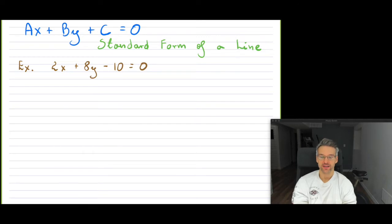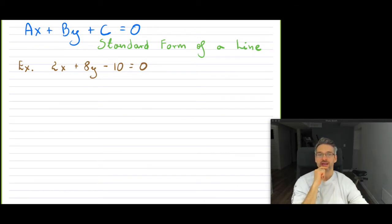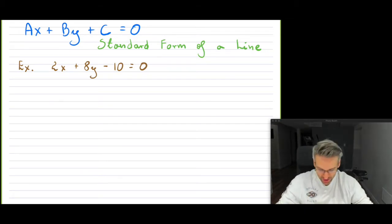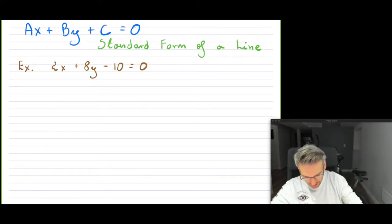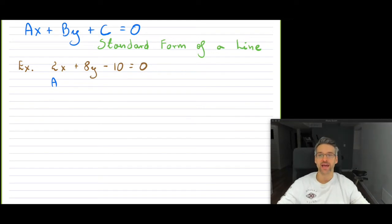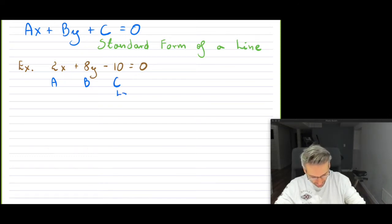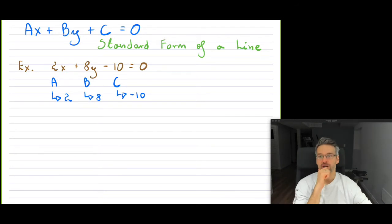In the standard form of a line, we basically try to move both our X and our Y variables into the left-hand side. I've provided an example: 2X plus 8Y minus 10 is equal to zero. So you can see this is considered the standard form. Your two is your A, your eight is your B, and your C is negative 10 — you take the sign with it. So C is negative 10, B is simply eight, and A is two. That isn't very hard to map out.